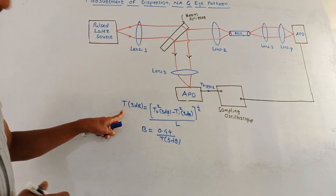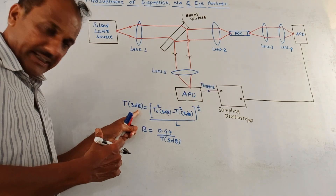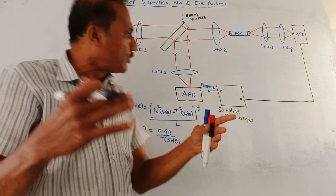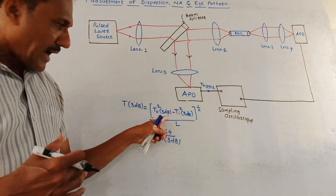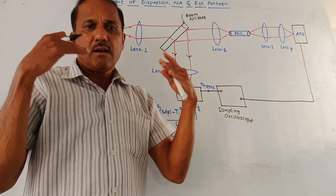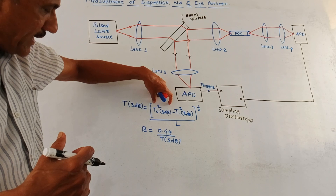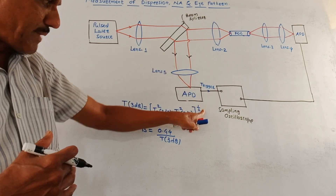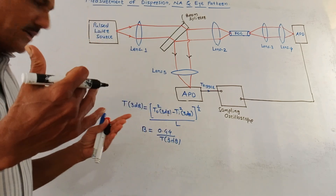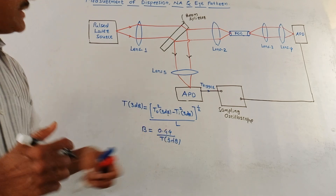This pulse broadening is denoted by T3dB — it is the 3 dB bandwidth. T3dB equals the square root of (T0_3dB squared minus Ti_3dB squared), divided by L. Here T0 is the pulse width at the output of the optical cable, Ti is the pulse width at the input, and L is the length of the optical cable. Once you obtain this pulse broadening T3dB, the bandwidth can be calculated as 0.44 divided by T3dB.